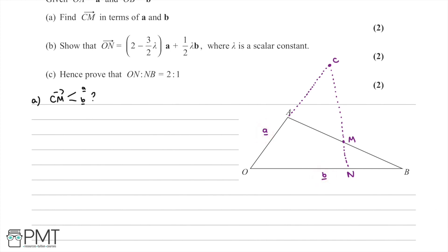To get from C to M we can go from C to A and then add on A to M. So we can write that CM is going to be equal to CA plus AM.